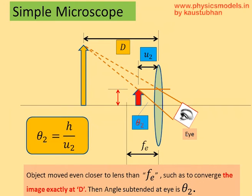Suppose we want even higher magnification. The trick here is to move the object even closer to the convex lens. You can see here that the red arrow is now at a distance u2 marked in blue from the convex lens and u2 is shorter than fe.